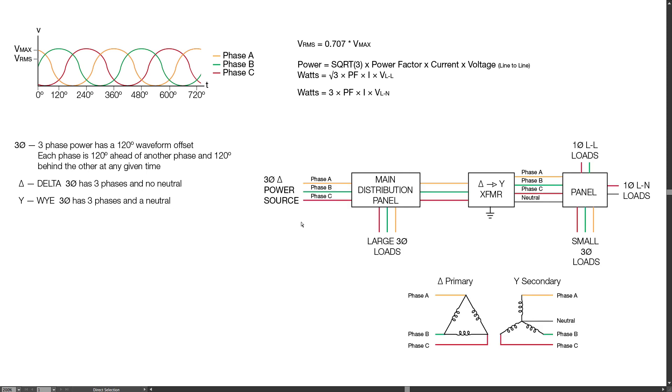Here we're going to look at a typical building distribution simplified. We have our three-phase power in, typically from a utility but possibly a generator. It goes into a main distribution panel, also called switchgear. From here you might have some large three-phase loads, possibly large HVAC units, pumps, and other big things that require a lot of three-phase power.